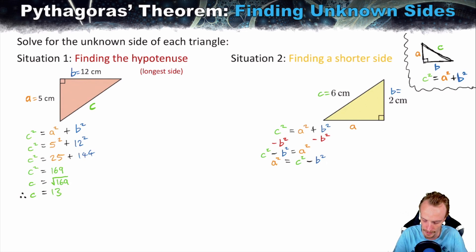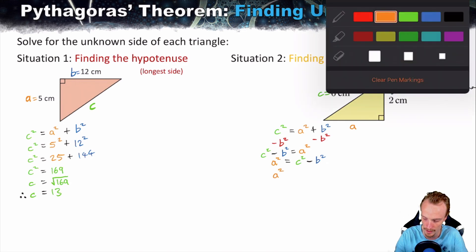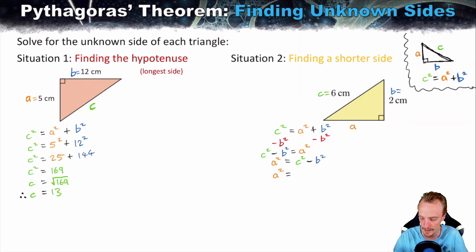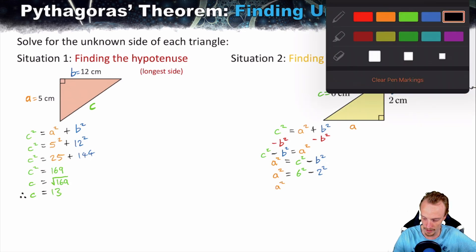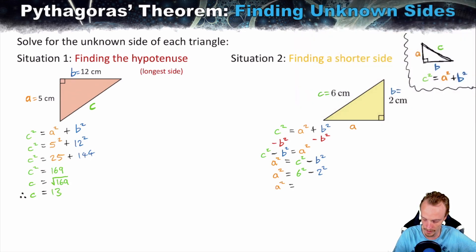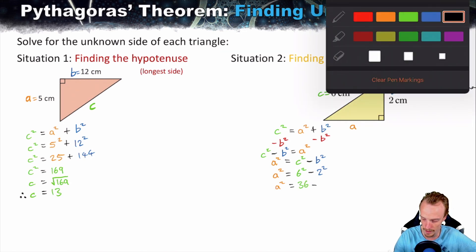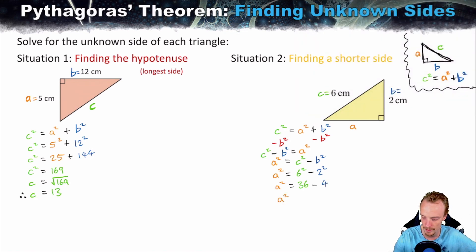We don't know A, so we leave that as A squared equals. We know C is 6, so C squared is 6 squared, subtract B squared which is 2 squared. Evaluating: A squared equals 36 subtract 4, which gives us A squared equals 32.